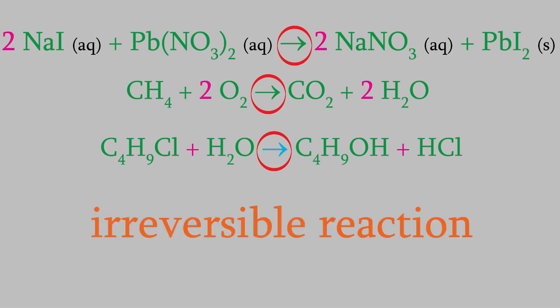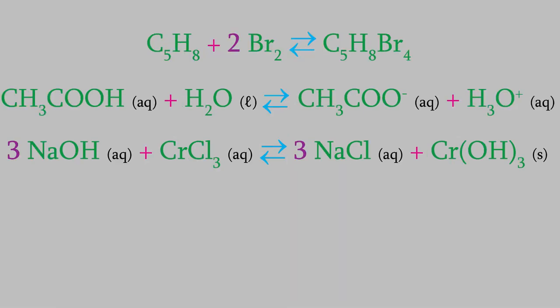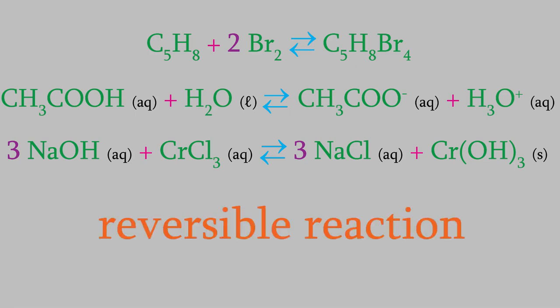However, it turns out that irreversible reactions are actually only a small minority of all the chemical reactions that are possible. In most cases, chemical reactions can go in the reverse direction too, so that we can get our reactants back. These are called reversible reactions, and we show this by drawing two opposing arrows between the reactants and the products, which shows that the reaction can go in both directions, as in this example.